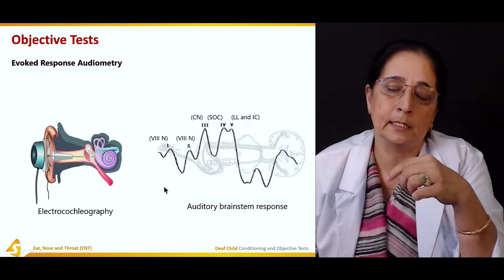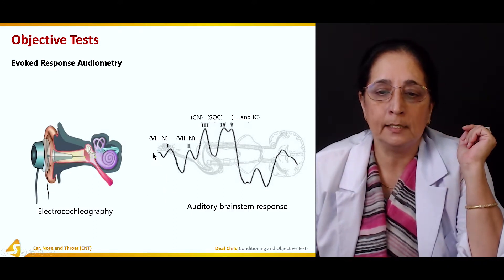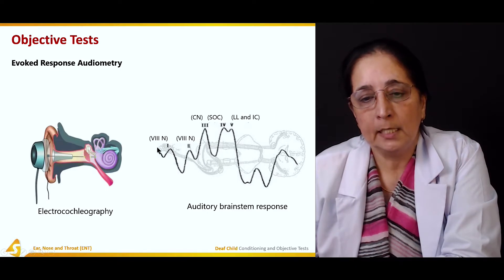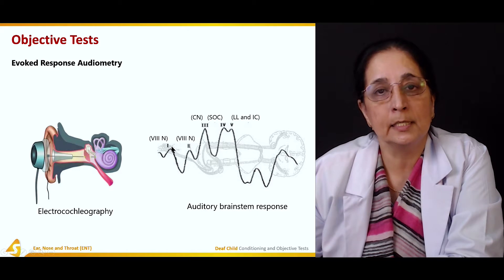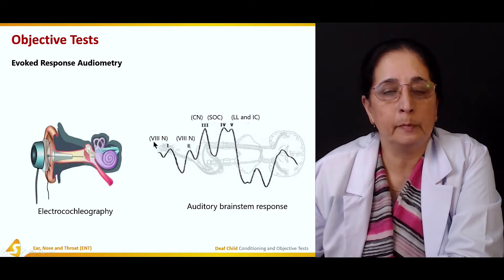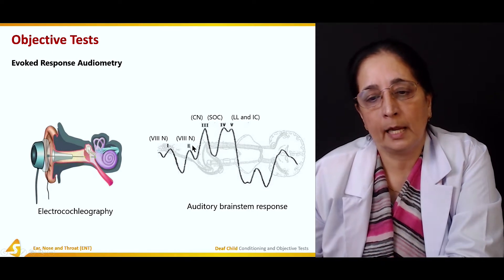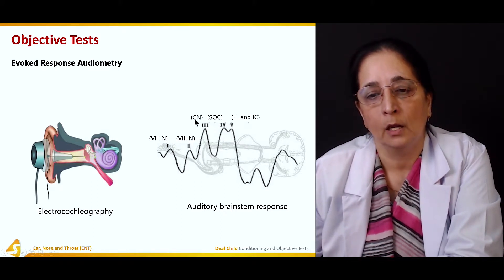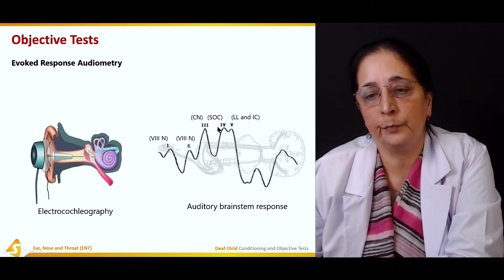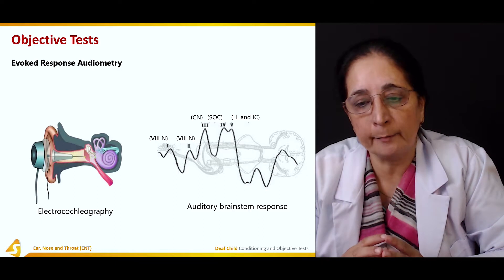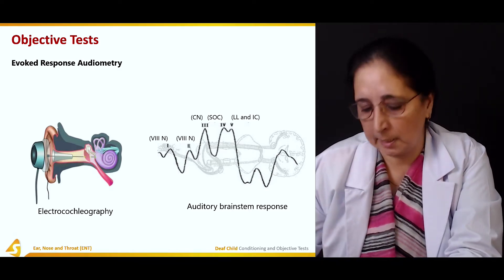The acoustic reflex tells us if the acoustic pathway — involving cranial nerves 7 and 8 and the auditory nucleus — is intact. Sound is produced and a recording gives us waves 1 through 5. Wave 1 is produced by the 8th cranial nerve, wave 2 also by the 8th cranial nerve, wave 3 by the cochlear nucleus, then we have the superior olivary complex and lateral lemniscus. All of this tells us if hearing and the brainstem response to auditory stimuli are normal.